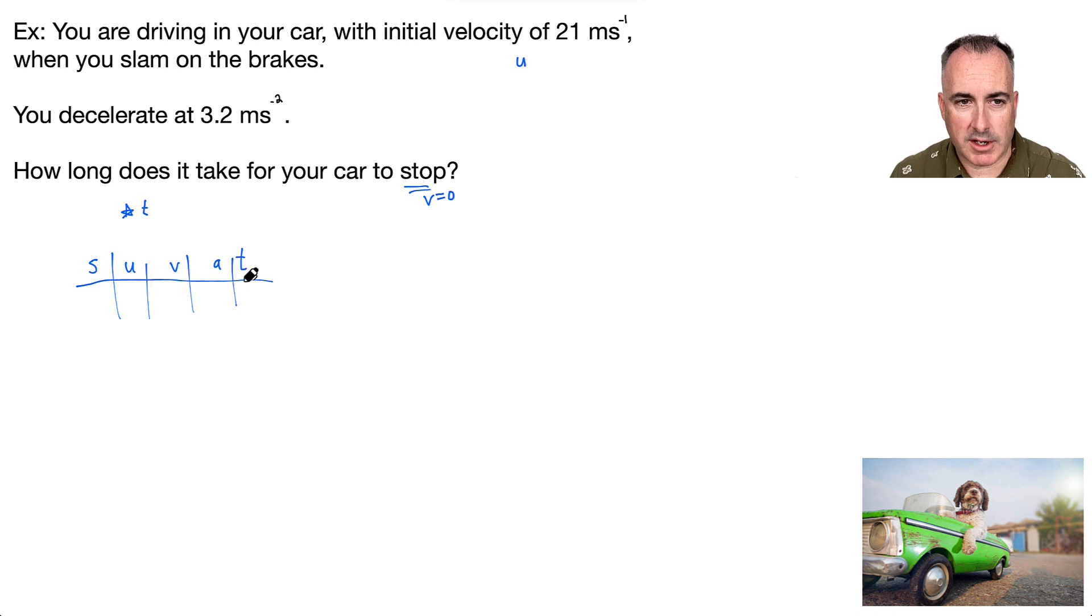So what I'm first going to do is write down SUVAT. I'm going to do a little table and be really careful with it. I'm only going to put in values that have the right units. S, the distance you travel. Do I know the distance? I actually don't. I don't know and I actually don't care. U, do I know the initial speed? Yeah. Let's assume it goes to the right, so that means it must be 21 meters per second. The final speed V is going to be zero.